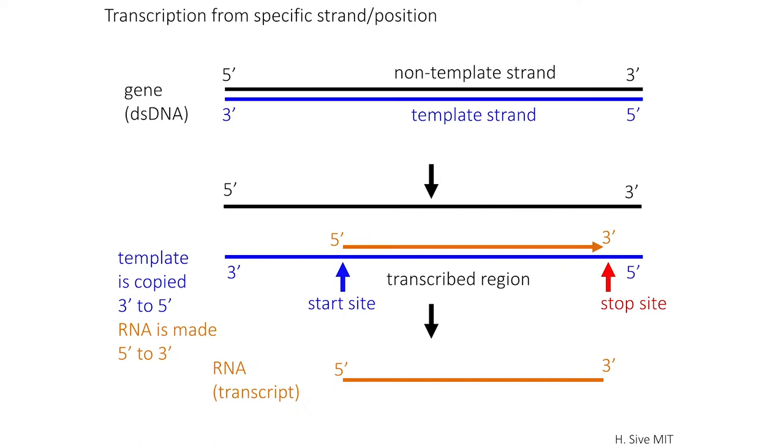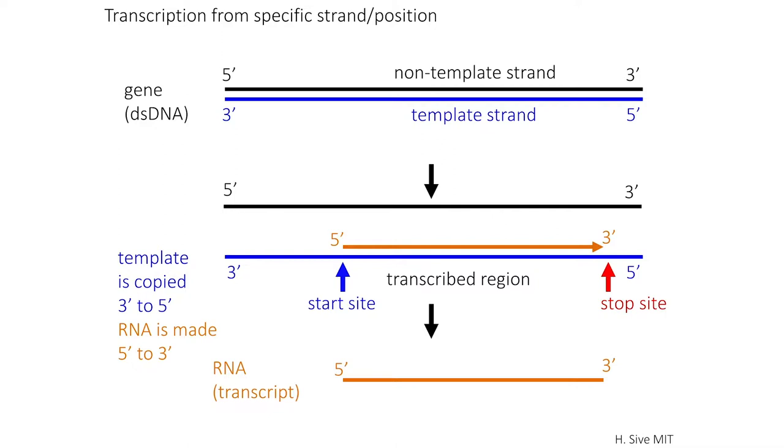Here's a schematic of transcription. I haven't put the exact nucleotides in here, but you can see template and non-template strand. You can see that the RNA is copied from just one of the strands. And after it's copied, it leaves the template, and the template strands go back together again.